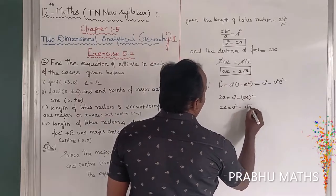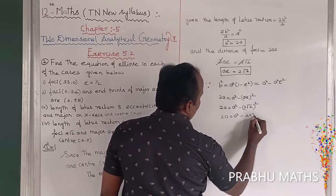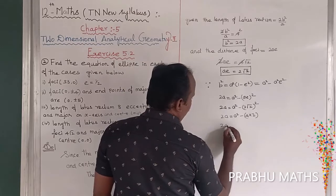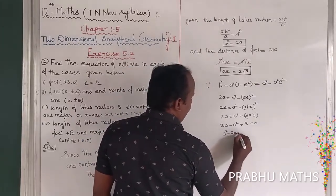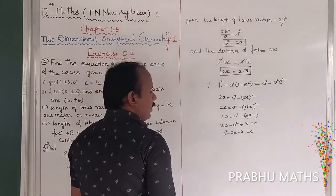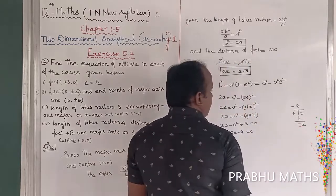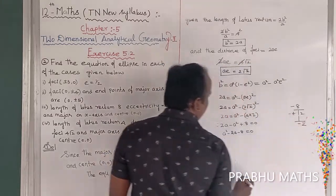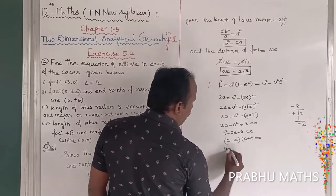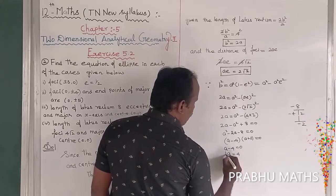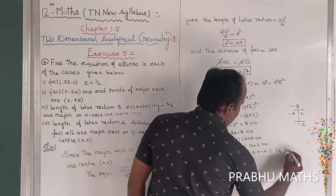Substituting ae = 2√2: 2a = a² - (2√2)² = a² - 8. Rearranging: a² - 2a - 8 = 0. Factoring: (a - 4)(a + 2) = 0, so a = 4 or a = -2. Since negative is not possible, a = 4.